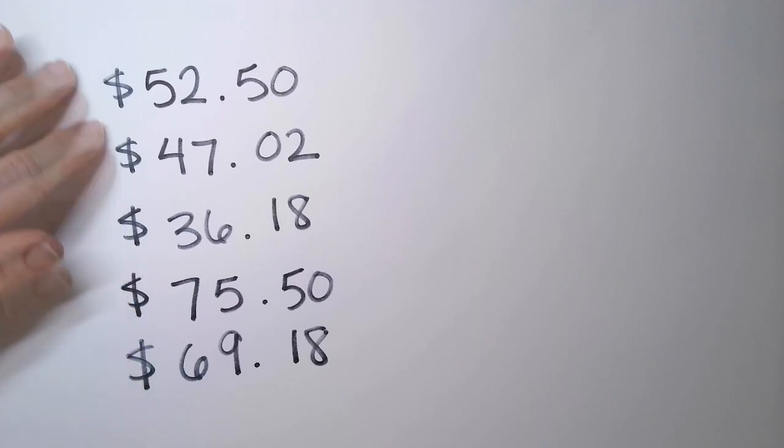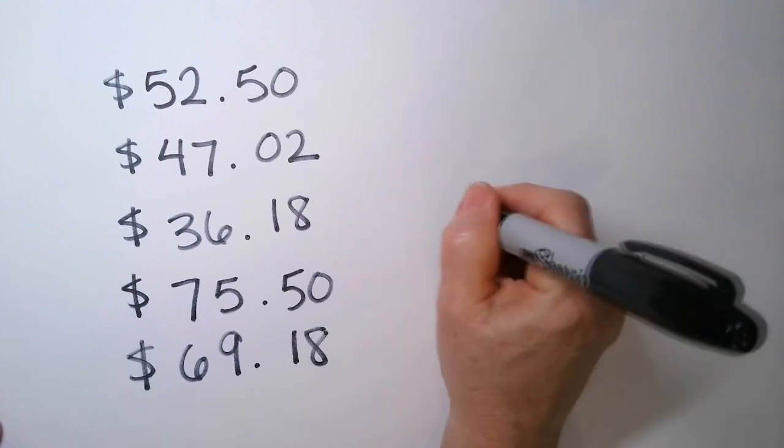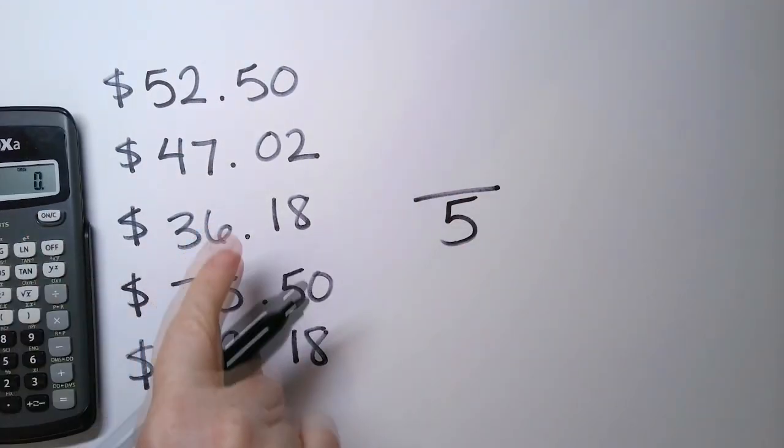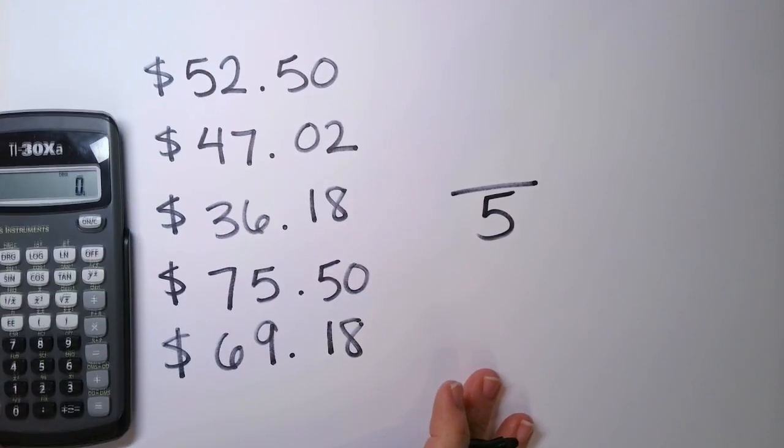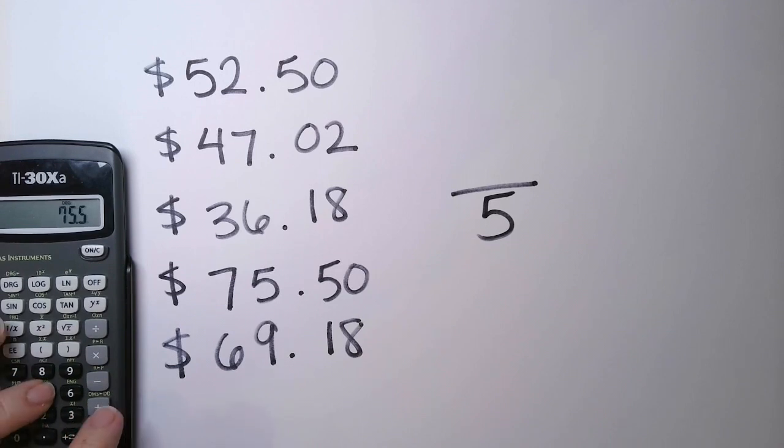So even though there's like a widespread in these numbers, we still just add them up together. How many numbers do we have? We have five. That goes on the bottom. And what goes on the top are all these numbers added together. So let's do it. So $52.50, $47.02, $36.18, $75.50, and $69.18.